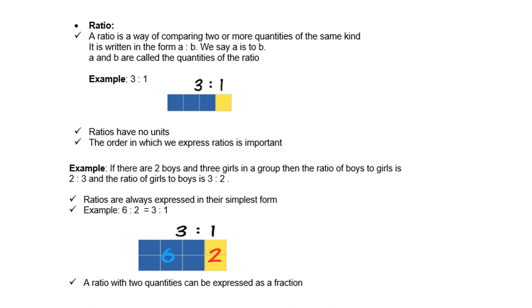Example, if there are 2 boys and 3 girls in a group, then the ratio of boys to girls is 2 is to 3, and the ratio of girls to boys is 3 is to 2. So it all depends which one you name first.